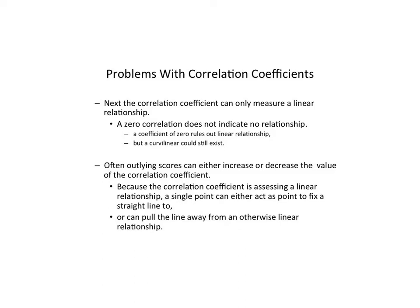Correlation can only measure linear relationships. A zero correlation does not indicate no relationship, because it cannot rule out a curvilinear relationship — it only rules out a linear relationship. Related to this, outlying scores can potentially increase or decrease values. Outliers are a big factor here, and only one outlier can really affect or influence your outcomes.